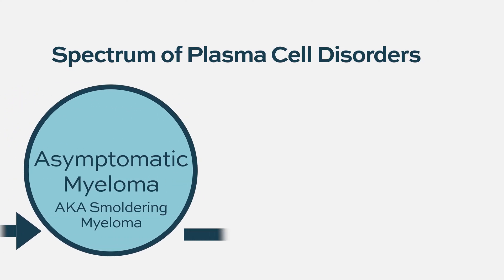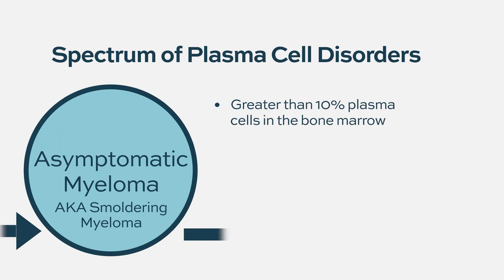In the middle is something called asymptomatic myeloma, where patients have greater than 10% plasma cells but no organ damage. The standard of care has been to monitor these patients, because over time some of them will not develop symptomatic disease. And as we know, myeloma remains incurable to date.